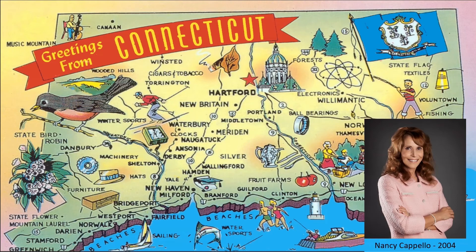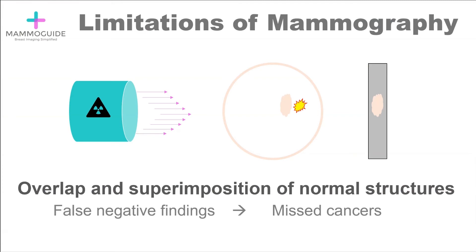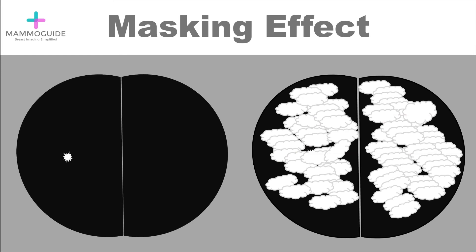Connecticut led the charge as the first state to mandate breast density notification, and it has swept the United States, with the majority of states now having some sort of breast density legislation. Her situation highlights a main limitation of mammography: if you have a clump of dense tissue in the same area as a mass or breast cancer, it will often obscure the underlying cancer. On the mammogram you'll see just the dense tissue but not the malignancy — this overlap and superimposition of normal structures leads to false negative findings, known as the masking effect.